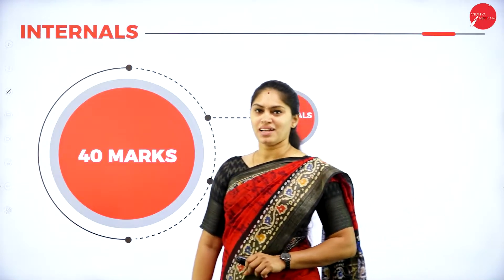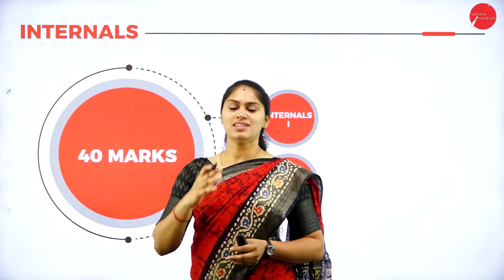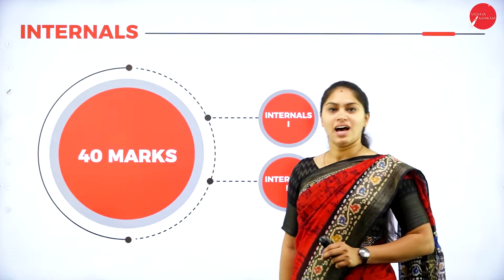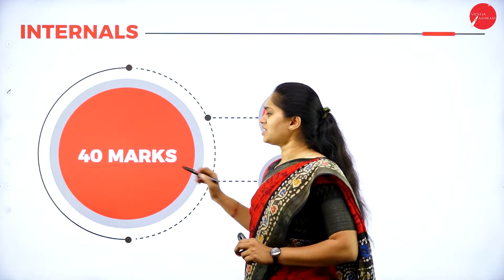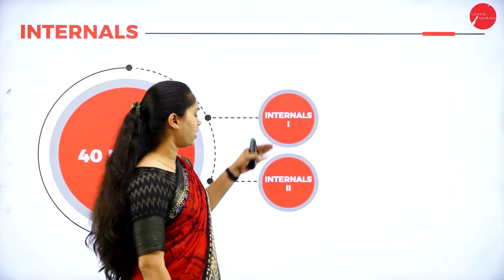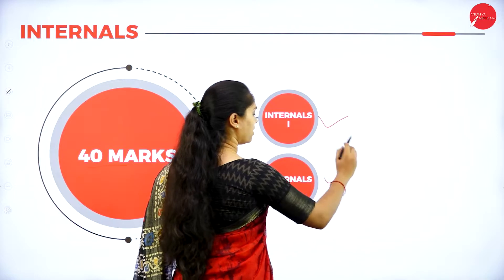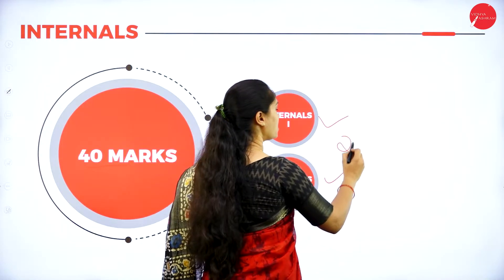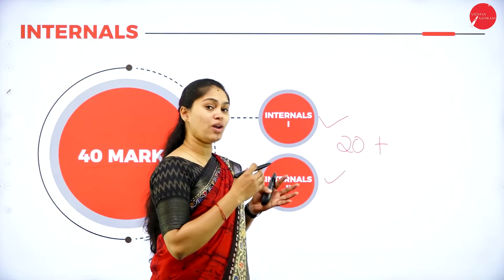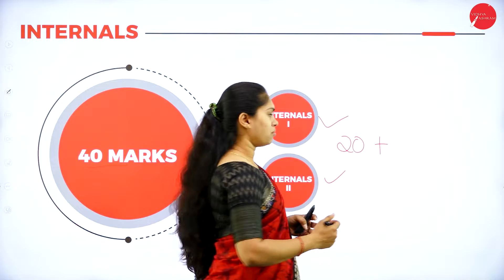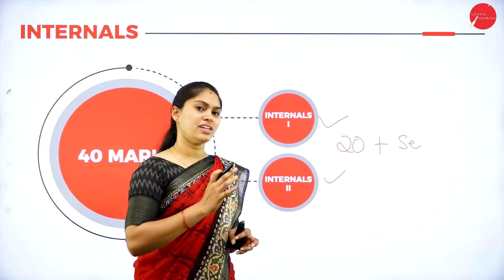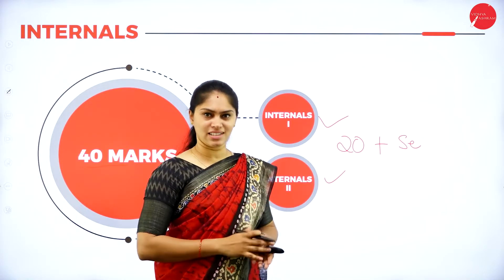The internal assessment is for 40 marks. You will have two internals — Internal 1 and Internal 2 — both mandatory, and these are converted to 20 marks. The other 20 marks cover your classroom behavior, assignment submission, and seminar performance. That is how you get 40 marks internally.